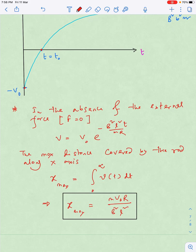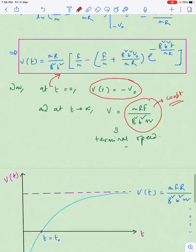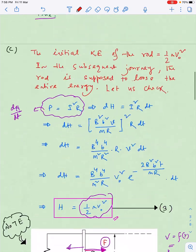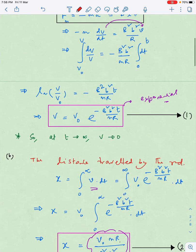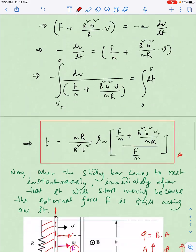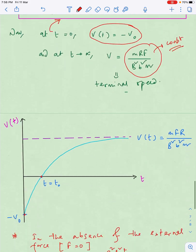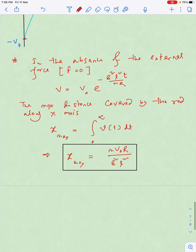If I substitute F equals 0, we will get v equals v₀ into e to the power minus of this. And you see, what is the beautiful part? If you see the previous equation, you are getting the same result. These are the validations of the fact that whatever concept we have applied in these questions are going in the right direction. If you want to calculate x_max, simply do 0 to infinity v dt, and you will get x_max as m v₀ R by B² L².